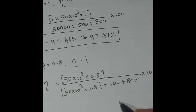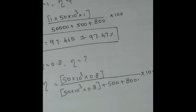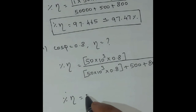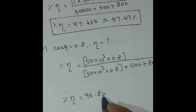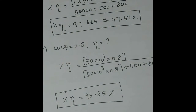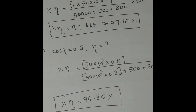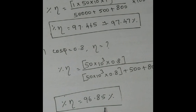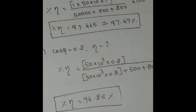Solving gives percentage efficiency of 96.85%. Comparing both cases: when power factor is unity, the efficiency of the transformer is higher; when power factor is reduced to 0.8, efficiency decreases. Therefore, it is necessary to maintain the power factor close to unity. Thank you all.